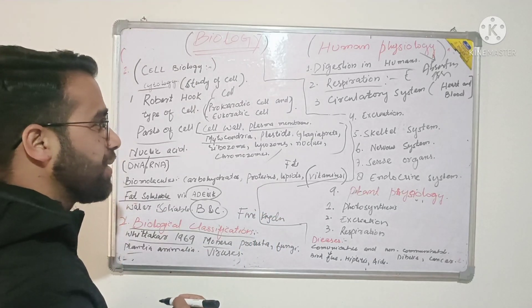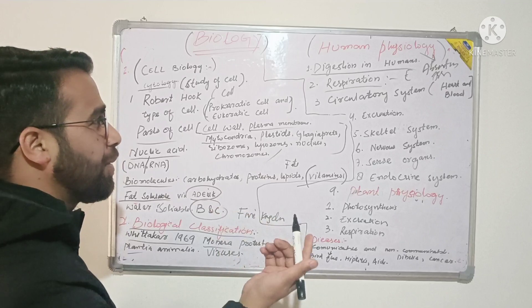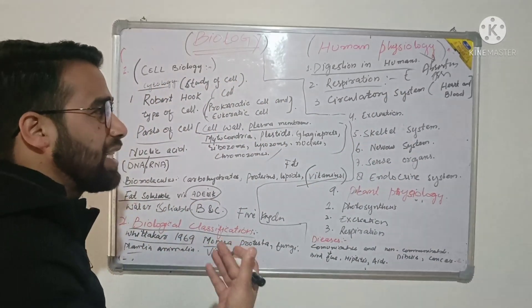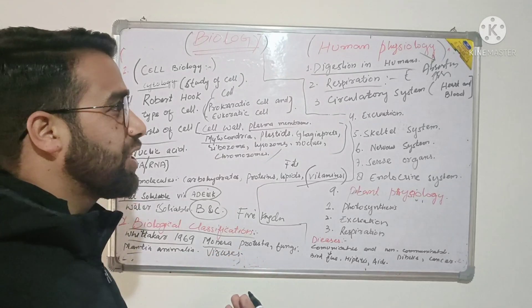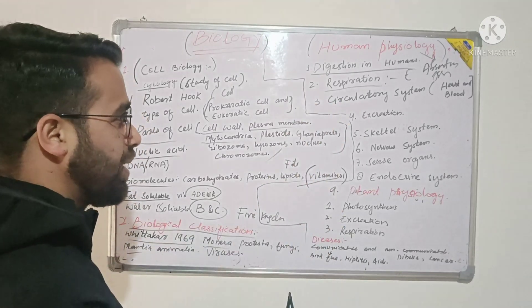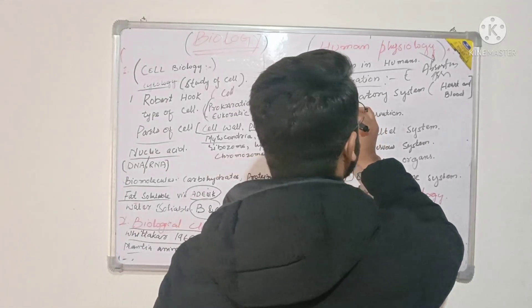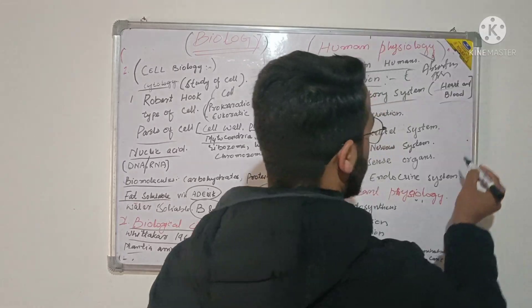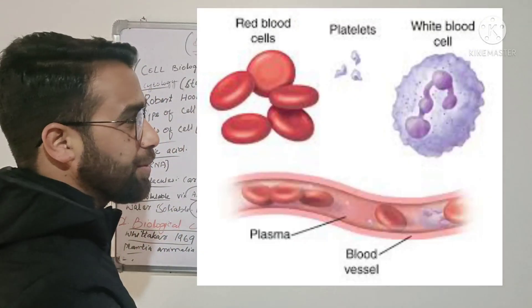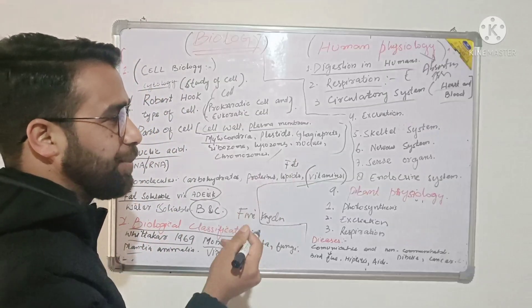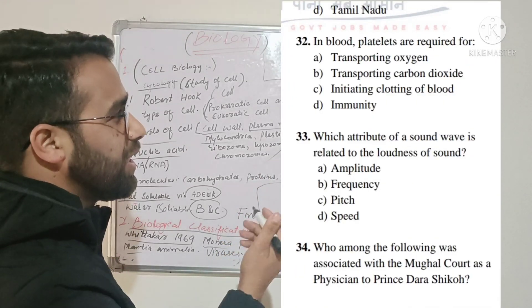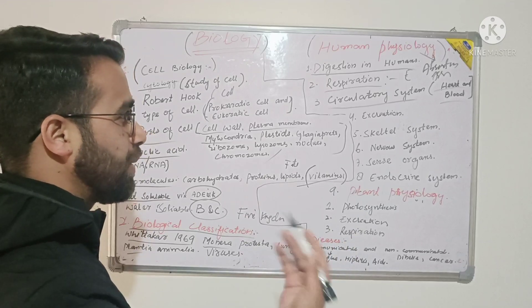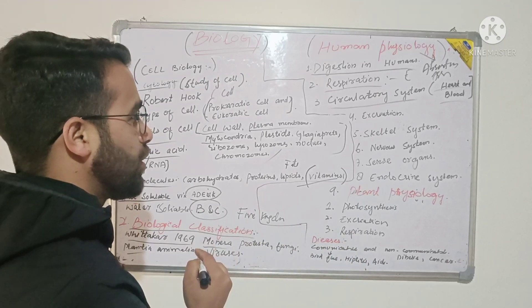In circulation, you will study about the blood, heart and blood. As you can see on the screen, there are questions about platelets, functions of red blood cells, white blood cells, plasma and platelets. You would study about that.